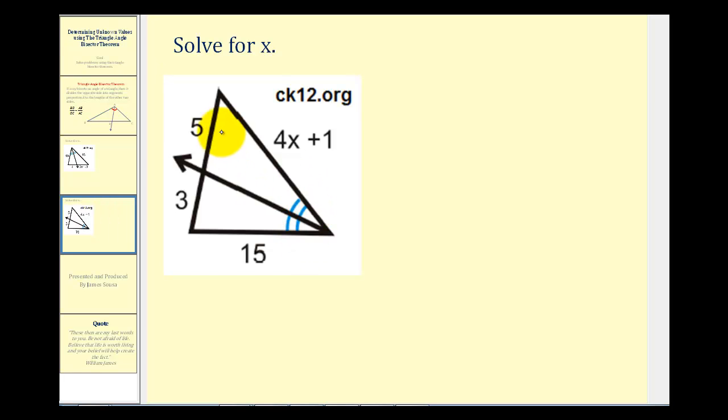So it divides this opposite side so that it's proportional to the other two sides of the triangle. So in order to solve for X our proportion would be 5 is to 3 as 4X plus 1 is to 15.